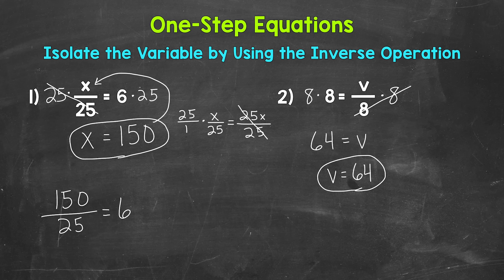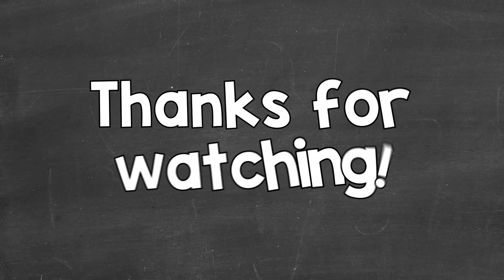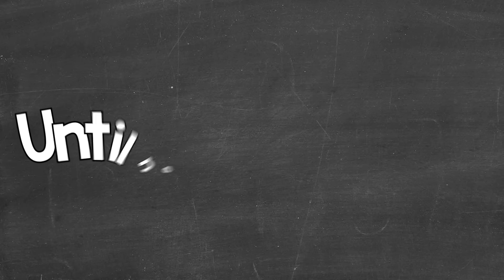Let's check that solution by plugging 64 in for v in the original equation. So we have 8 equals 64 divided by 8. 64 divided by 8 does equal 8, so that's the correct solution. v equals 64. So there you have it. There's how you solve one-step equations. I hope that helped. Thanks so much for watching. Until next time, peace.